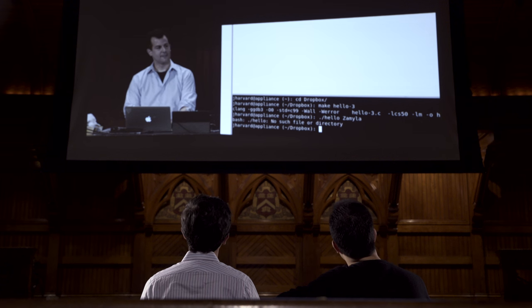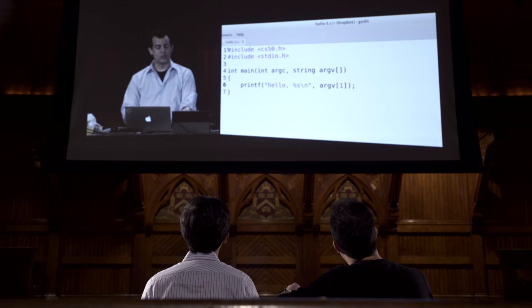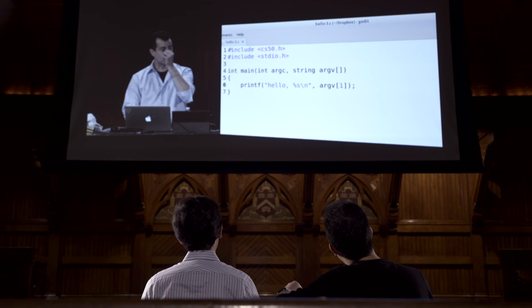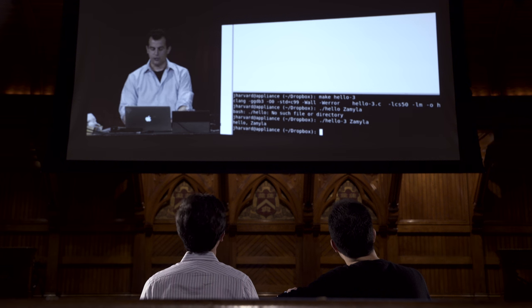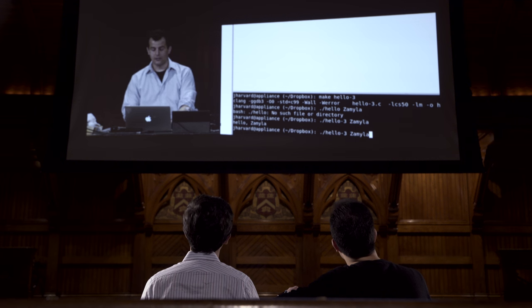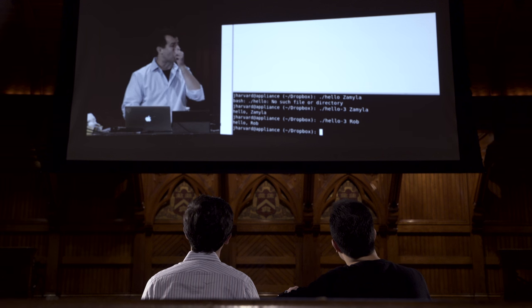What did I do wrong? I think I fixed my hair, which might mean I was trying to remember what went wrong here. I don't remember if this was deliberate or not, but the program is called hello-3, not hello. But let's call it a good teachable moment. Zamyla, enter, and now we have hello Zamyla. Meanwhile I can change this to be Rob or really any other word. But let's consider a corner case — what might you expect will happen if I don't type anyone's name?